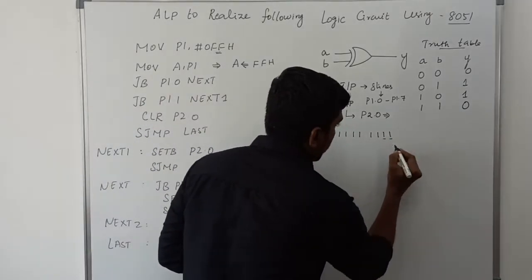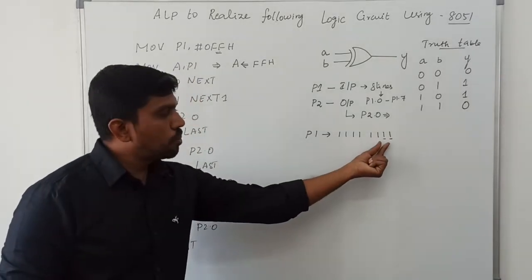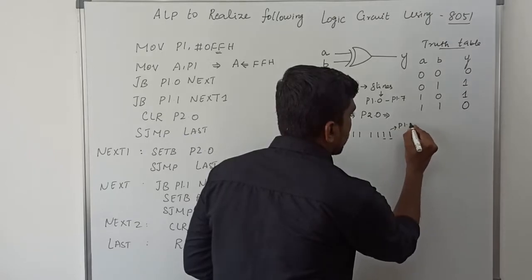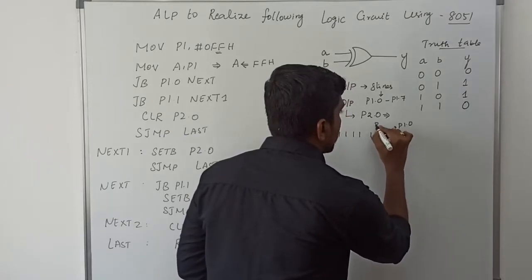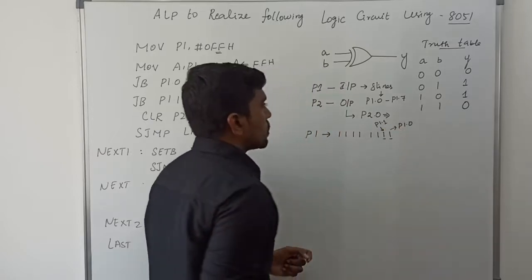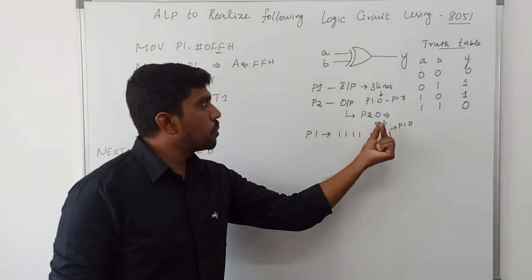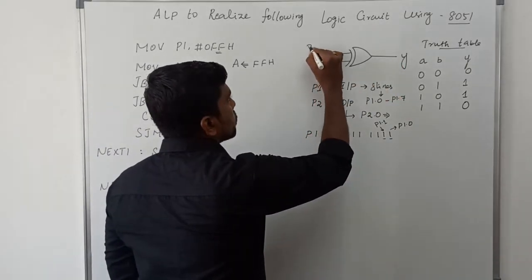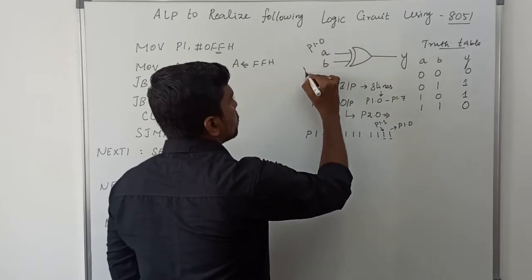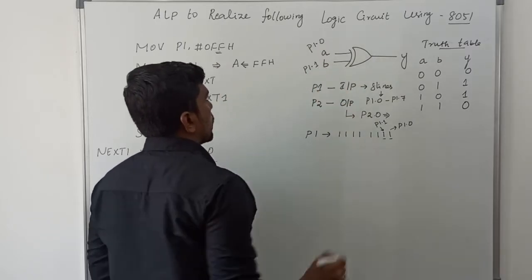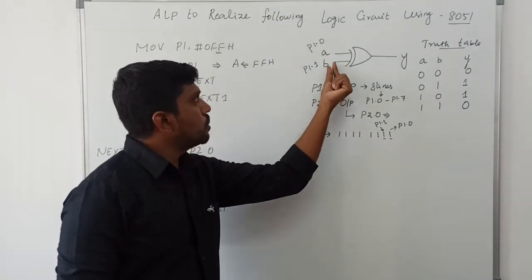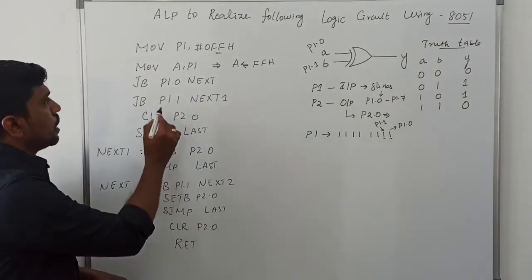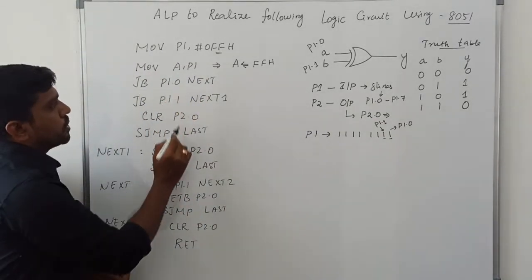Since Port 1 acts as the input port, we concentrate only on the two LSBs: P1.0 and P1.1. Based on these two bit values, the XOR gate produces its output. A is connected to P1.0 and B is connected to P1.1. These two bit values are transferred to inputs A and B, releasing the output Y.